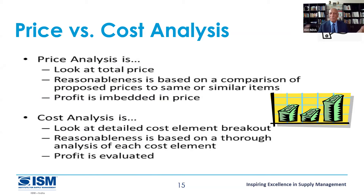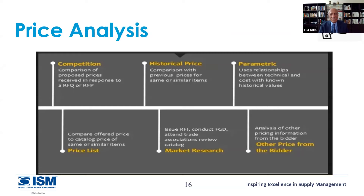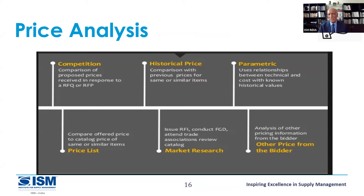The broad cost elements include direct and indirect. Direct is direct labor and direct materials. Indirect includes indirect materials and indirect labor, plus overheads and G&A administration costs. For price analysis, if I get an RFQ or RFP, the competition gives me offers. I also look at historical price — any proposal coming to me, I want to see the price, how many offers were received, and parametric formulas. If I was buying 200 megawatt generators and now want 400, what ratio should I apply? These are the different approaches.